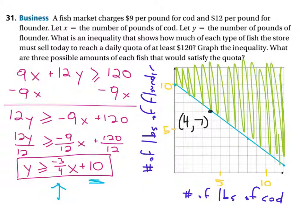If you sold four cod, because that's the x coordinate and seven flounder, you would meet the quota of $120. Now we can pick some values above. We could say, okay, maybe you just sell 12 cod and zero flounder. That would be fine. That would actually exceed the number because you can see that it's above the line and not sitting on it.